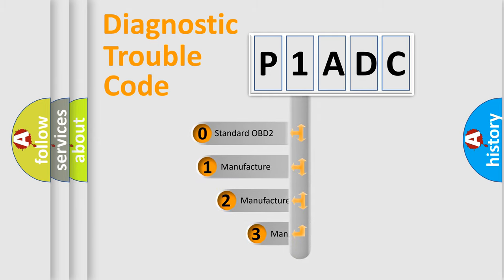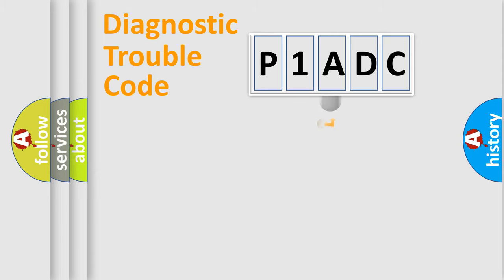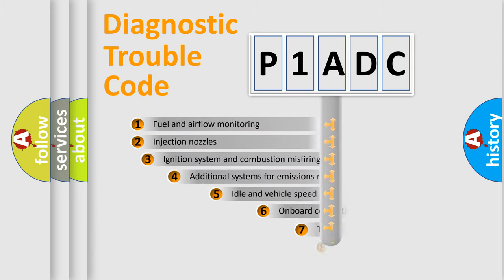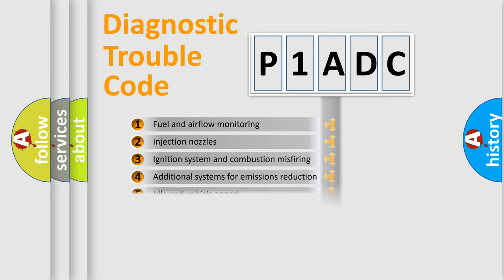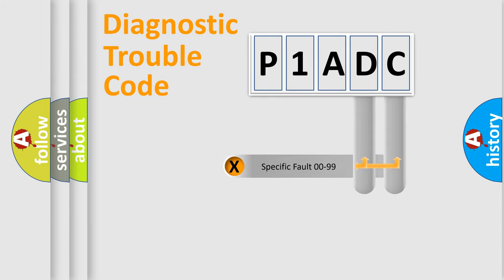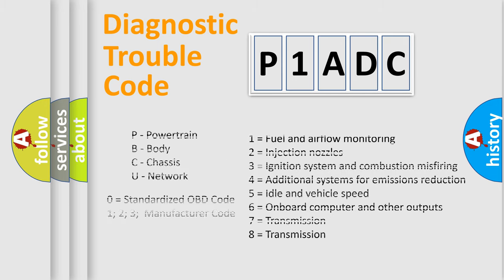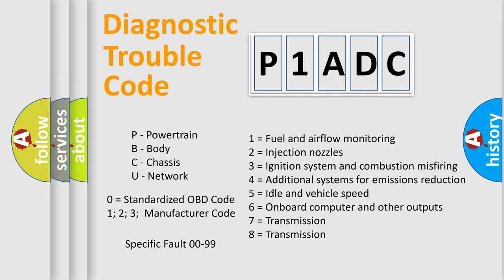If the second character is expressed as zero, it is a standardized error. In the case of numbers 1, 2, or 3, it is a more specific expression of a car-specific error. The third character specifies a subset of errors. This division is valid only for the standardized DTC code, and only the last two characters define the specific fault of the group. Such a division is valid only if the second character code is expressed by the number zero.